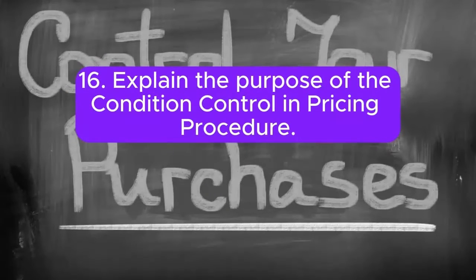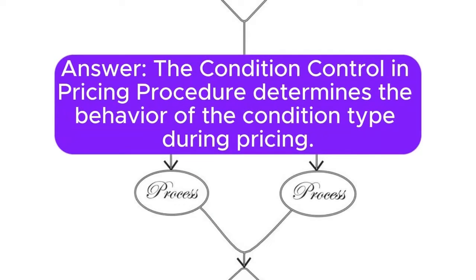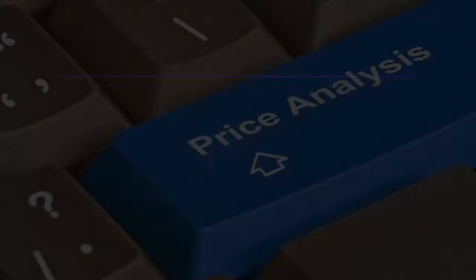Question 16: Explain the purpose of the condition control in pricing procedure. Answer: The condition control in pricing procedure determines the behavior of the condition type during pricing. It specifies whether the condition is mandatory, optional, statistical, or informational.